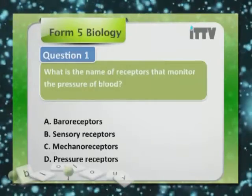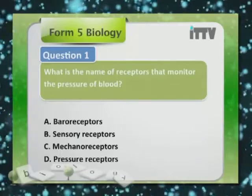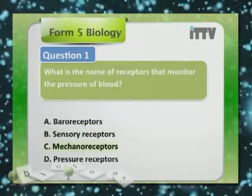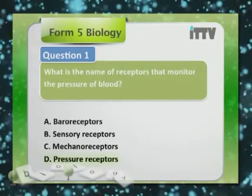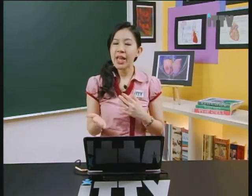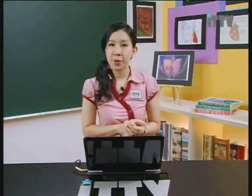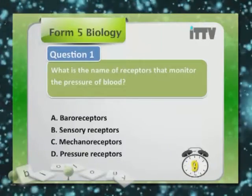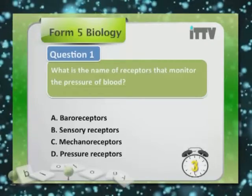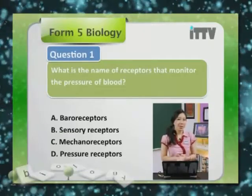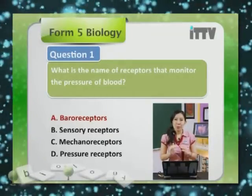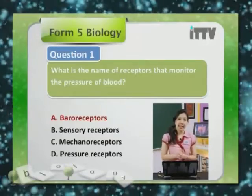Mastery test Question 1: What is the name of receptors that monitor the pressure of the blood? A. Baroreceptors, B. Sensory receptors, C. Mechanoreceptors, D. Pressure receptors. The answer is A — baroreceptors. They monitor the blood pressure of the blood against the arterial wall.